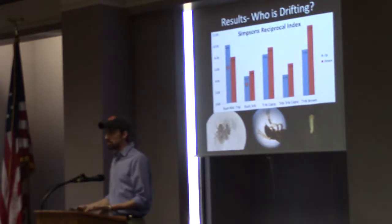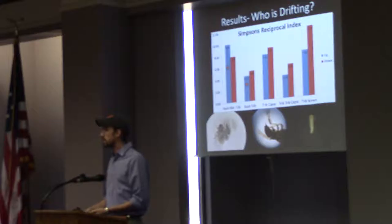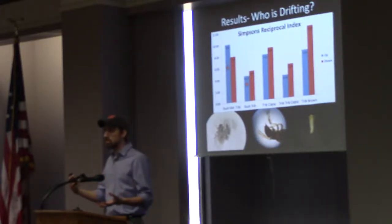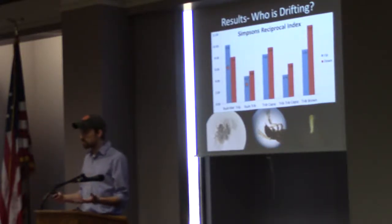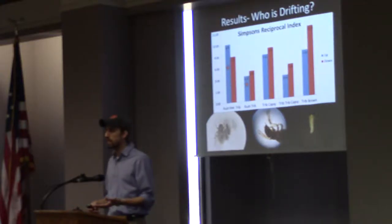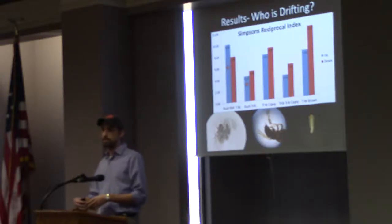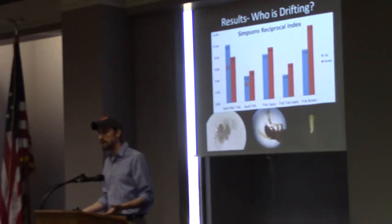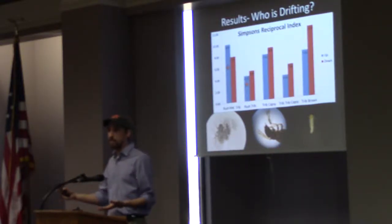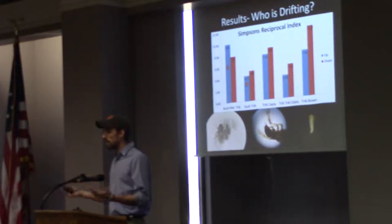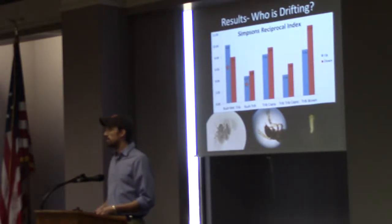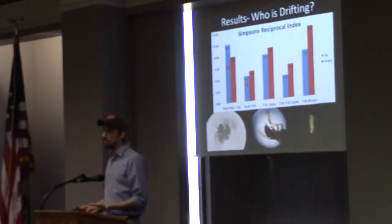Another way to look at it is the Simpson's Reciprocal Index. We used two different indices because one is more heavily dependent on rare taxa and the other is more heavily influenced by common taxa, so you have to look at both at the same time. Again, we're not really seeing much difference between all the streams, between fish and fishless, or upstream and downstream.